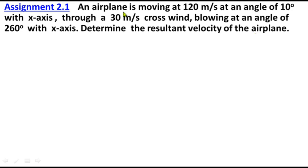This question is about vectors because the airplane moves at 120 meters per second at an angle of 10 degrees and the wind is moving at 30 meters per second at an angle of 260 degrees with the x-axis. We need to find the resultant velocity.